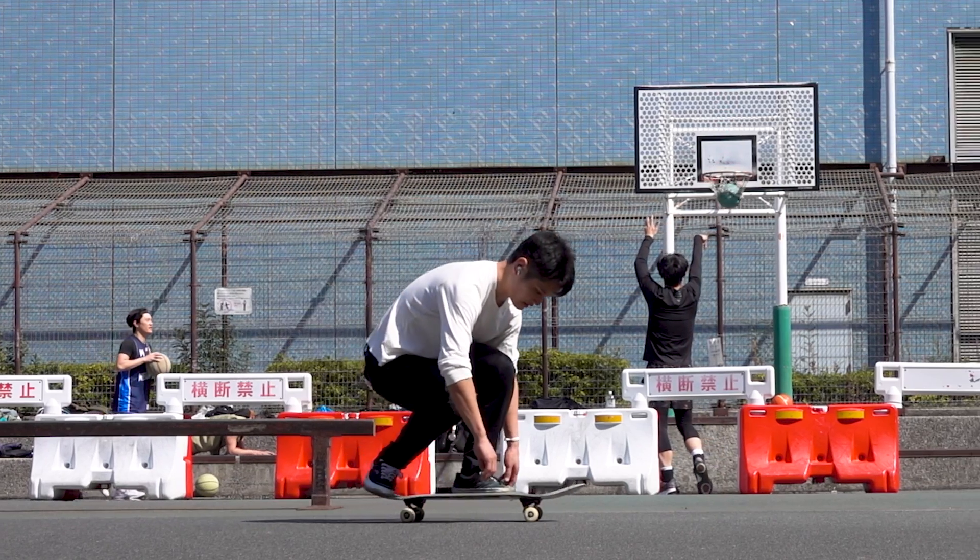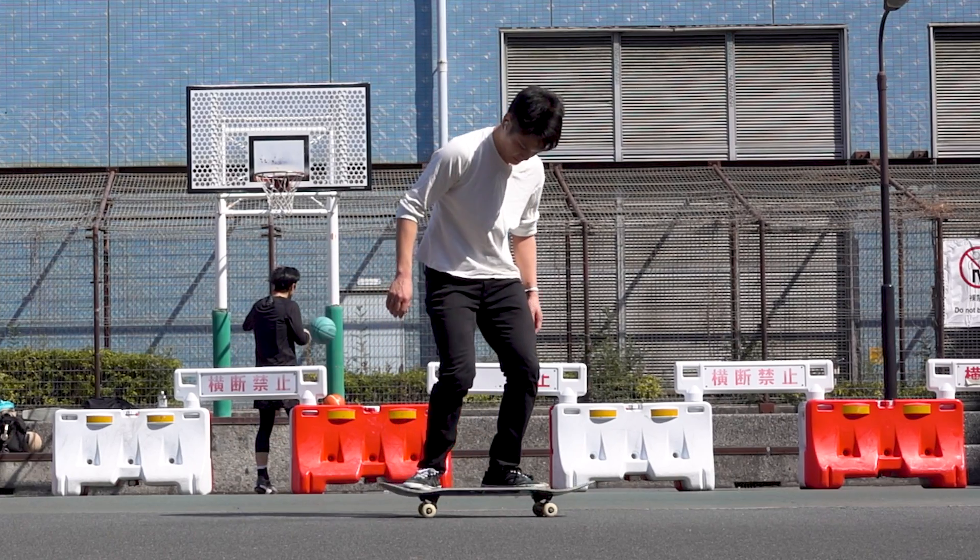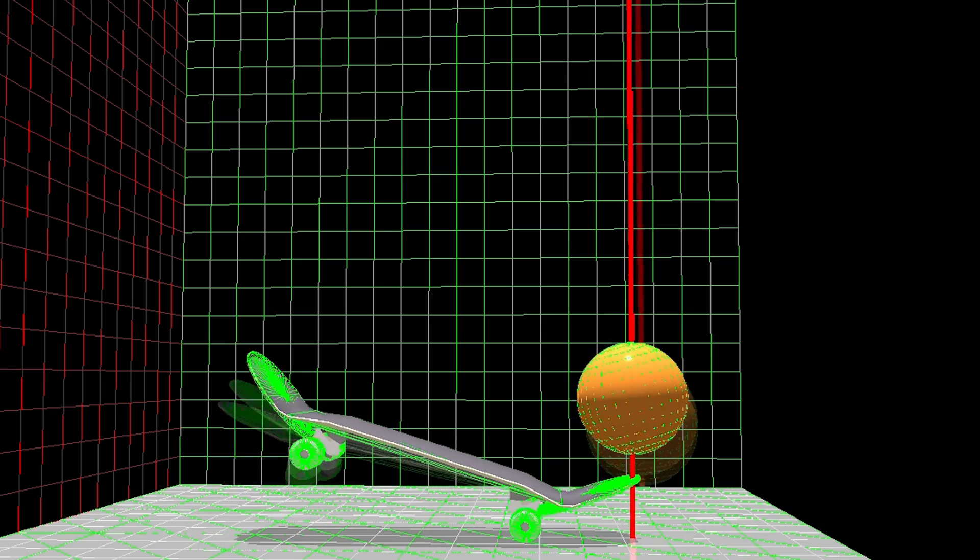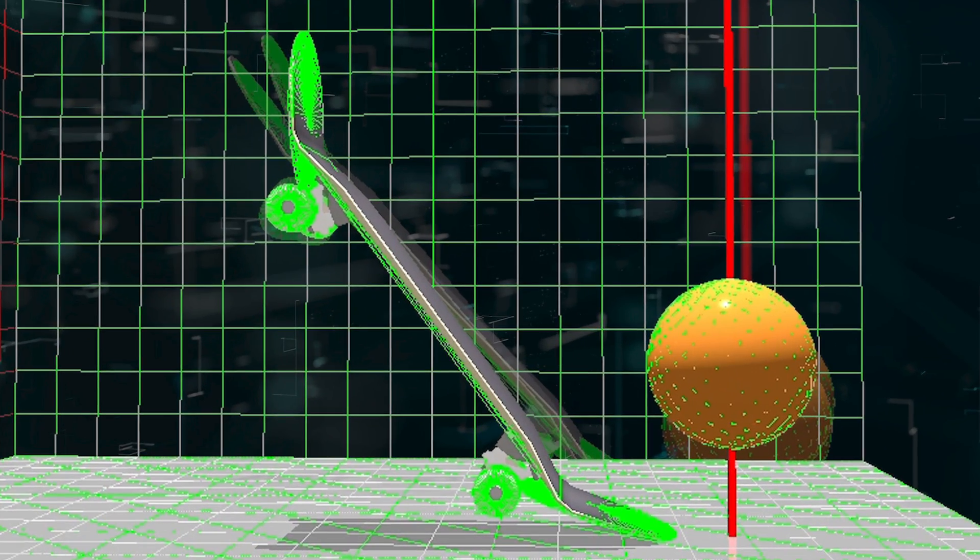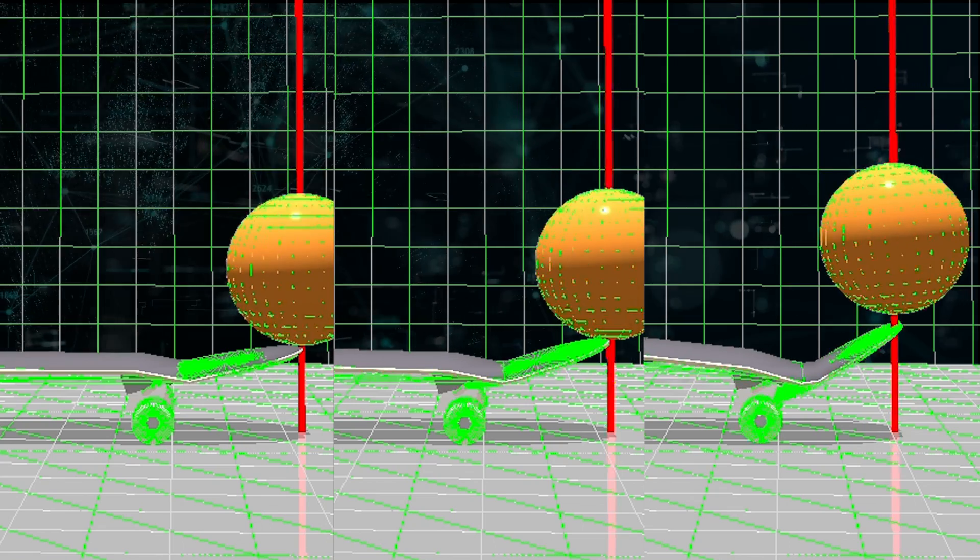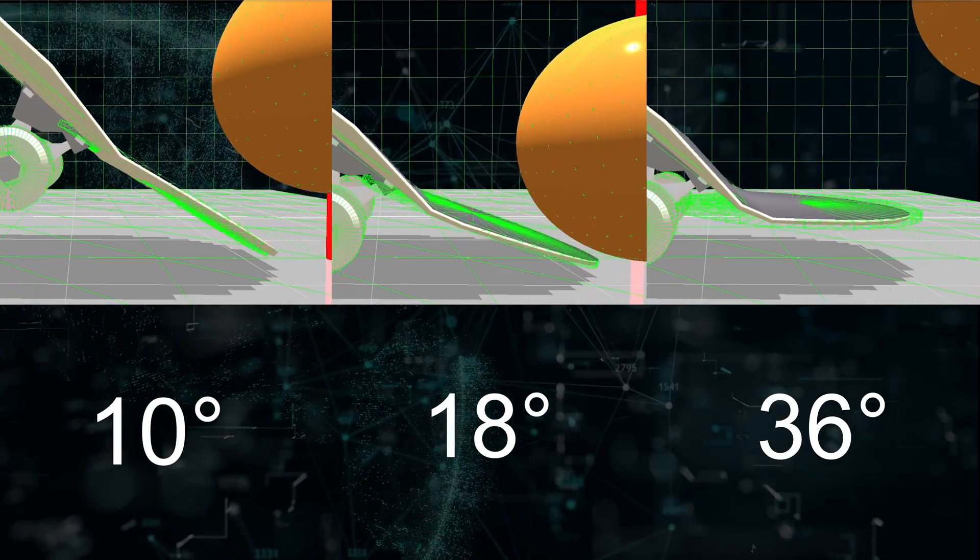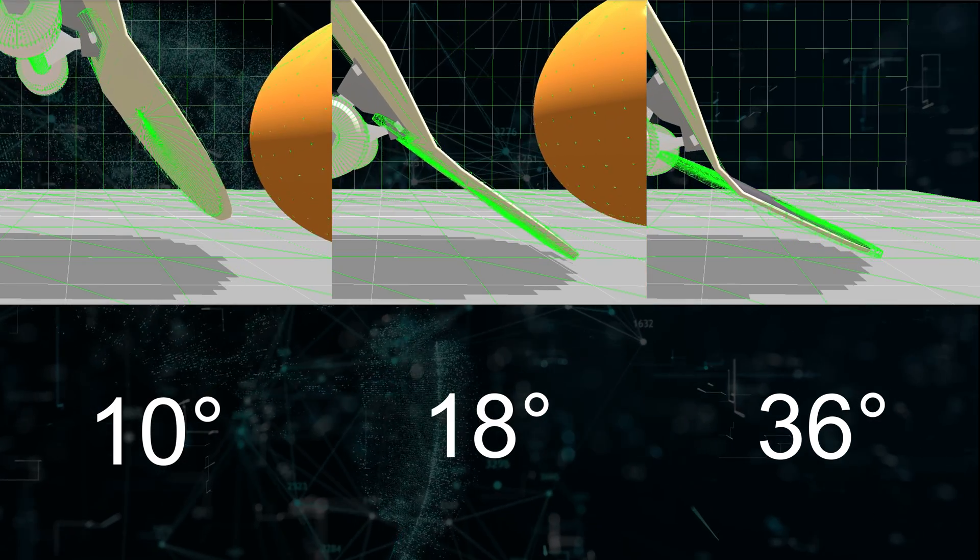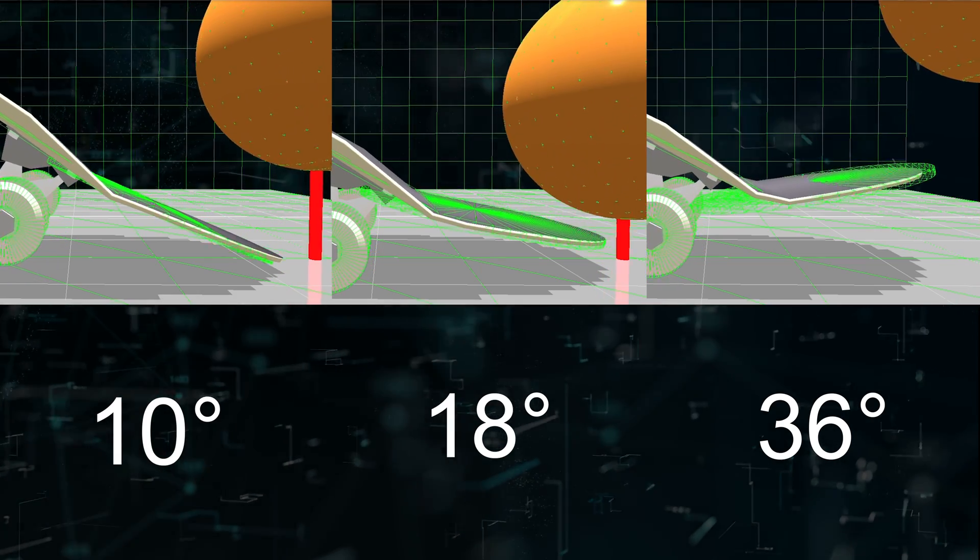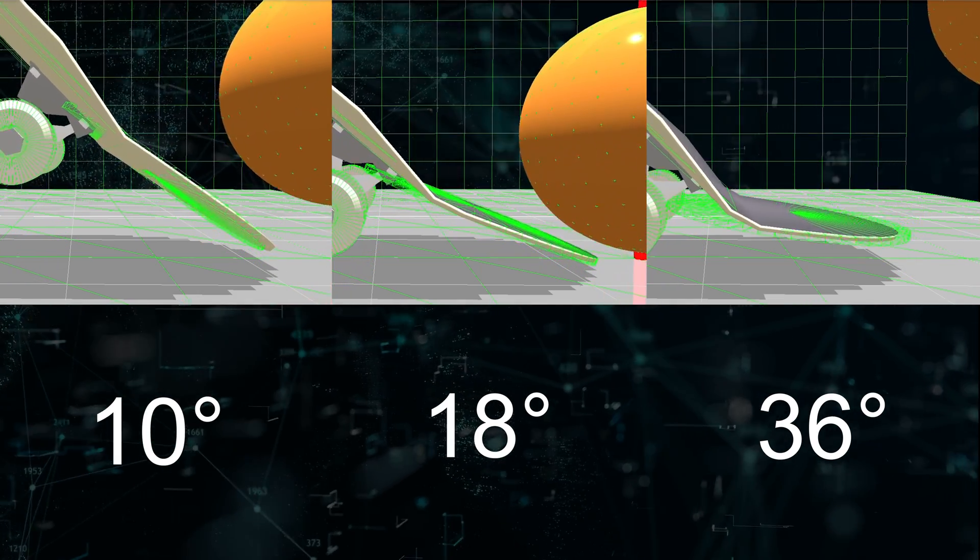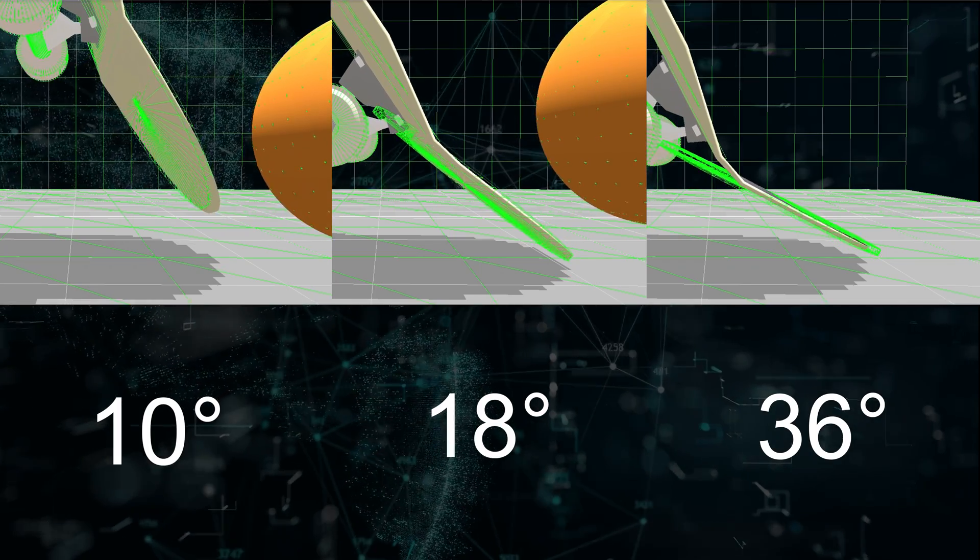However, in actual tricks, it is also essential to consider other elements such as the role of the front foot and timing. For example, the 36-degree board has already risen to a greater angle than the other boards when the tail hits the ground, and would cause more friction with the front foot. We can also see that the board bounces up the latest because it takes the longest time until the tail hits the ground, affecting the timing. Once again, this experiment focuses only on the board's behavior when it receives some external force on the tail. Let's see how the angle of the tail affects real skateboarding experiences when other elements are taken into account in future videos.